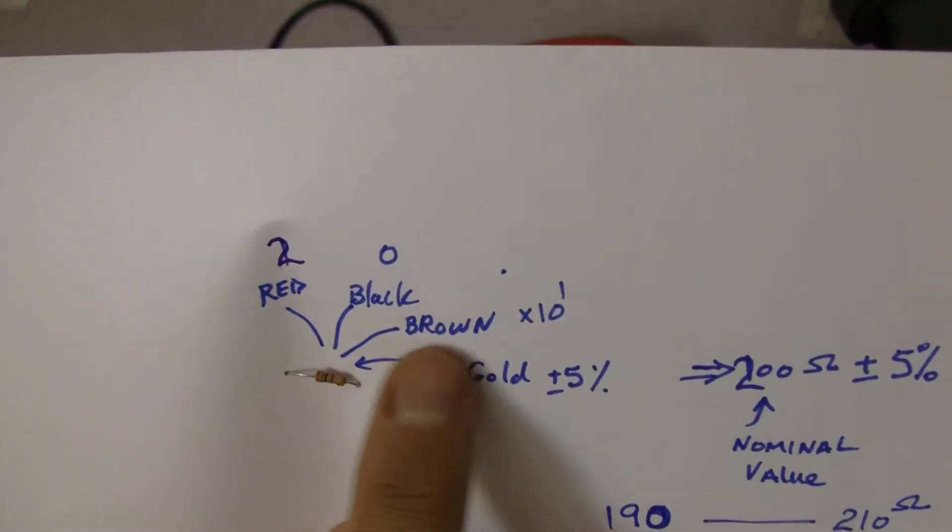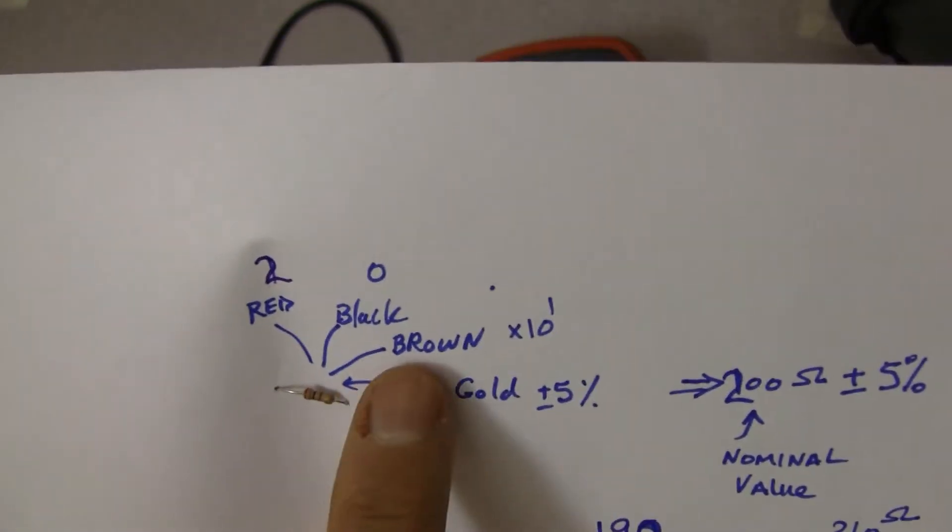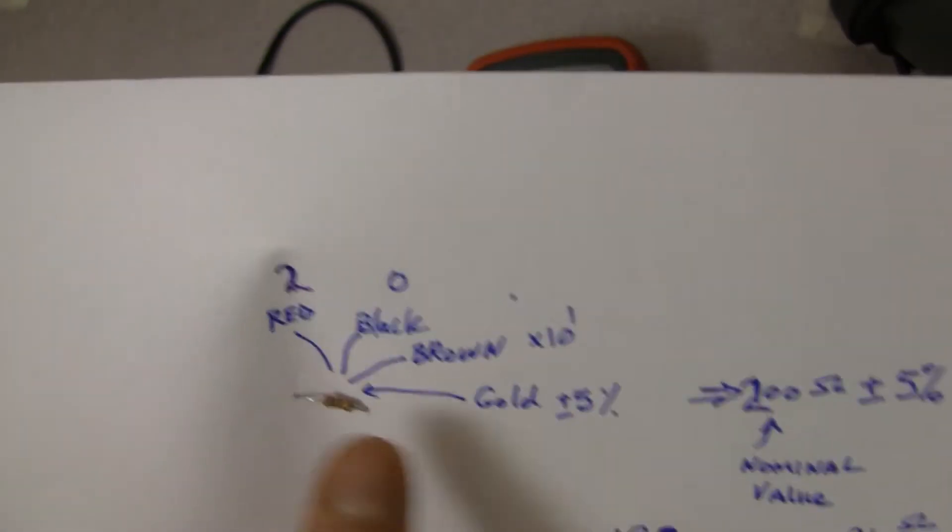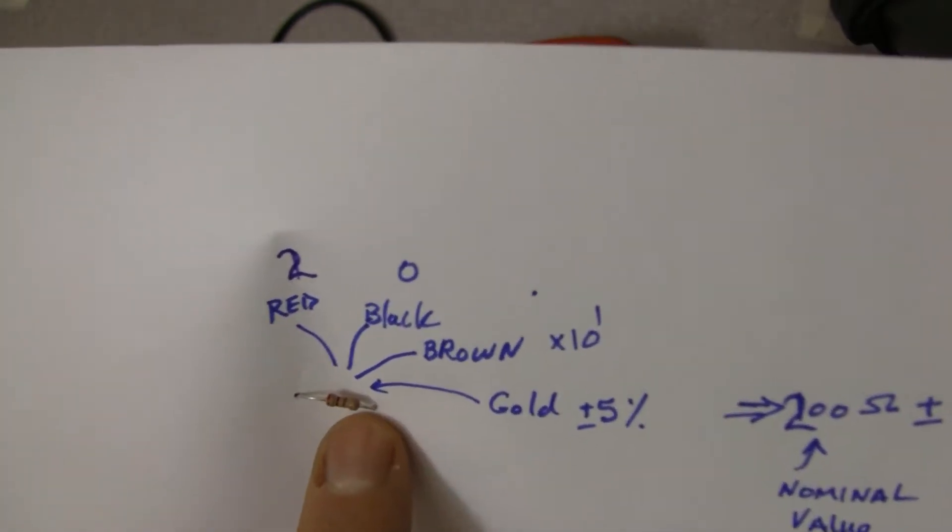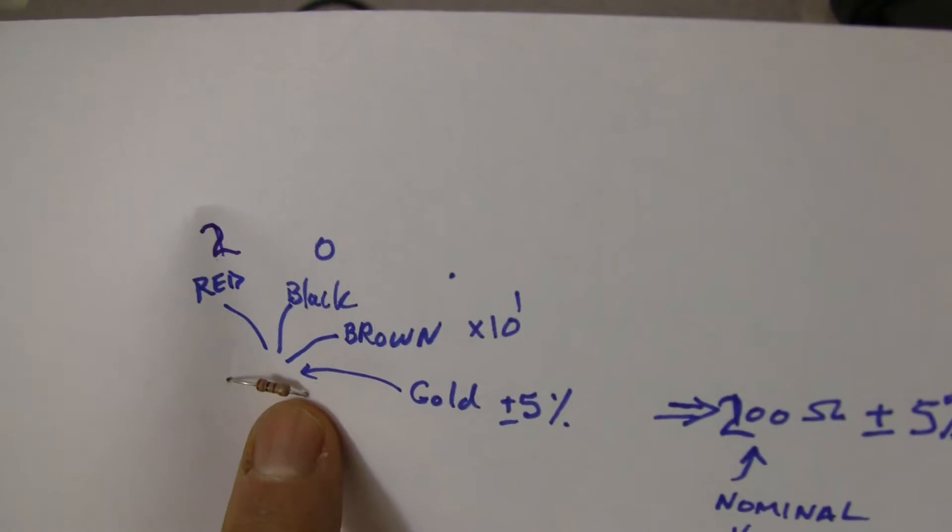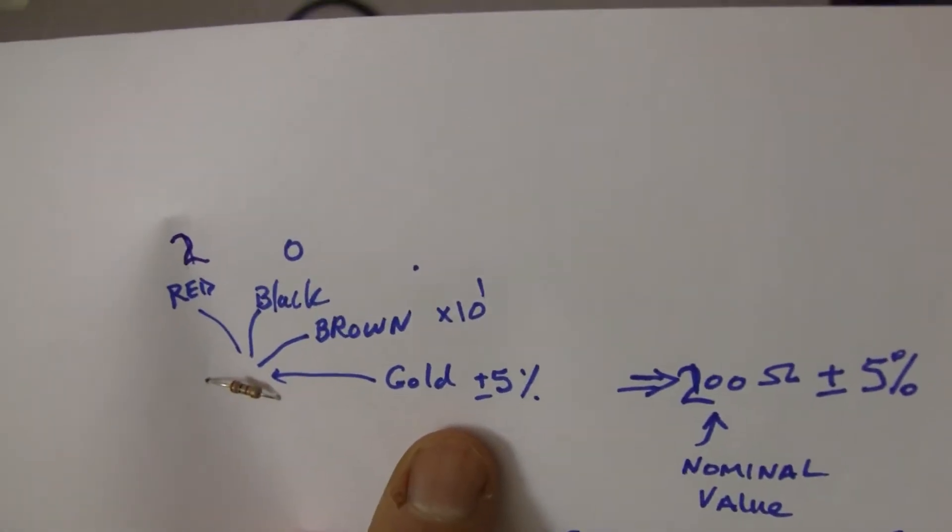The third color band gives you a power of 10. So in this case, it's brown, so the power of 10 is one. So you've got 20 times 10, which is 200. The last band, if you look at it, it's a gold color band, indicates a 5% tolerance.